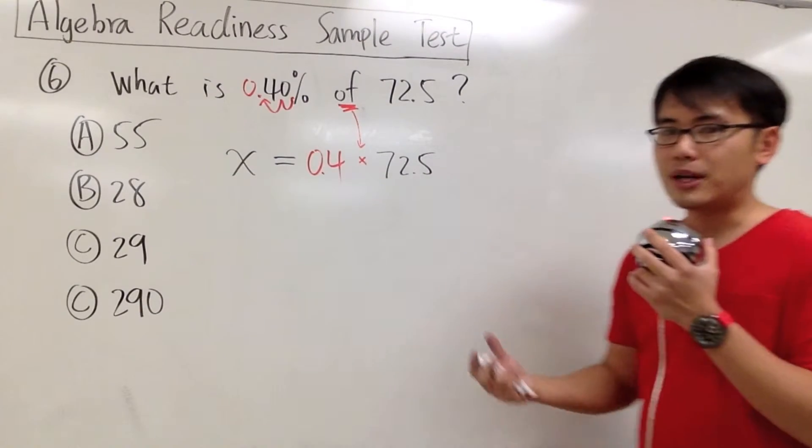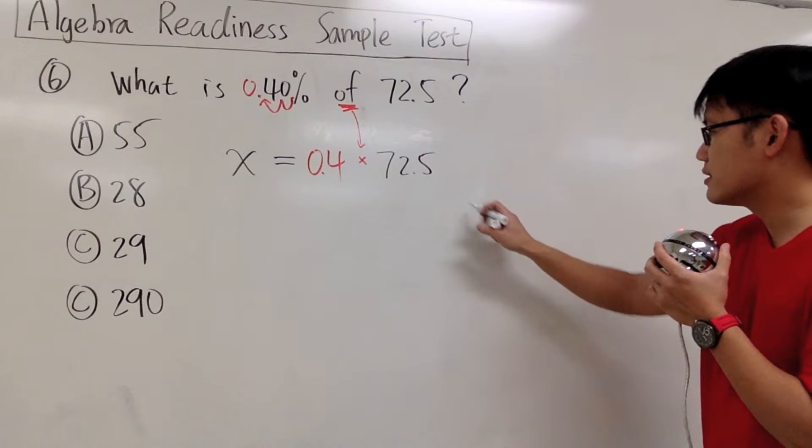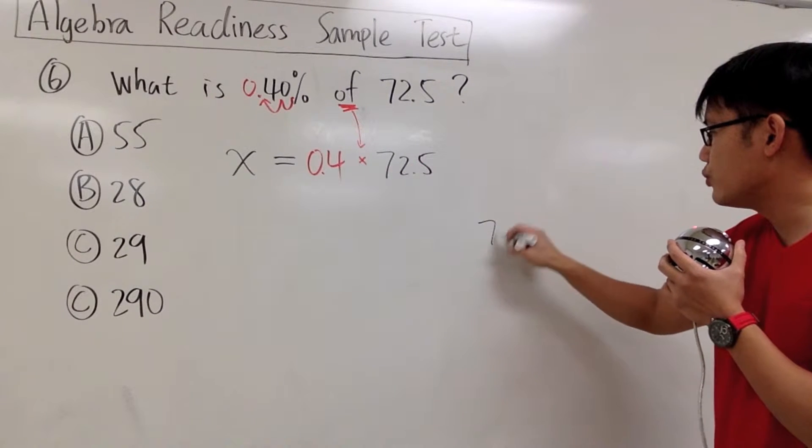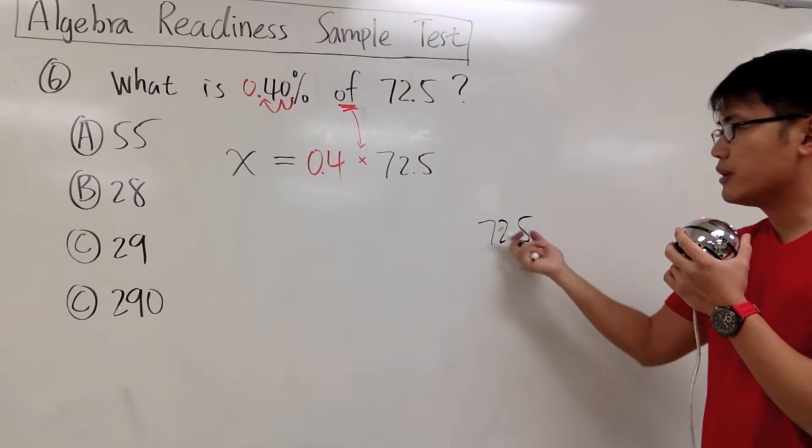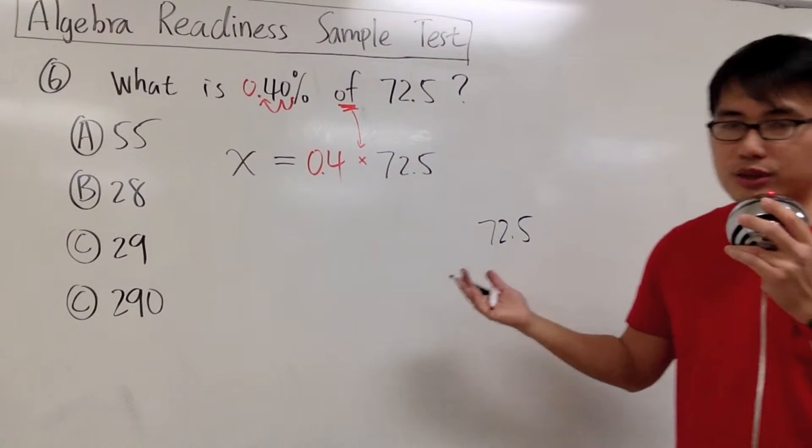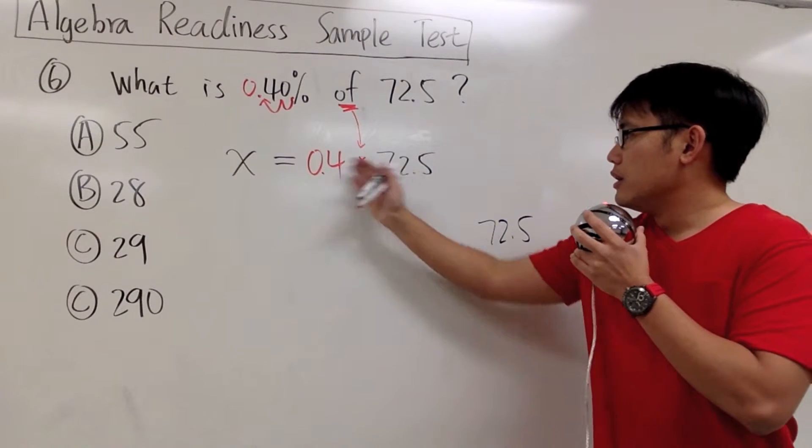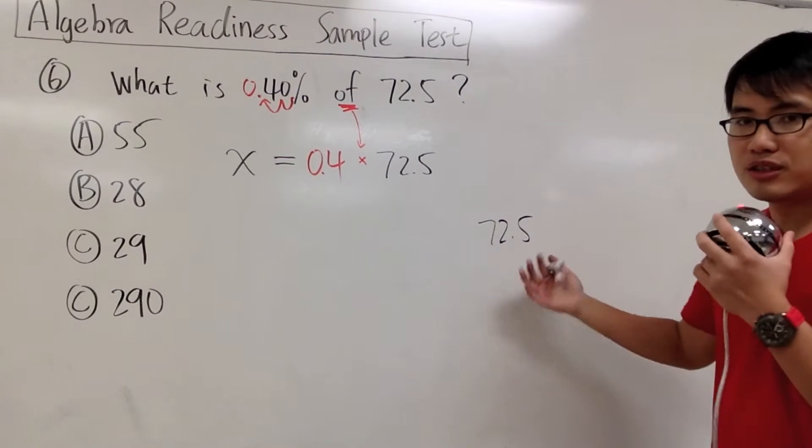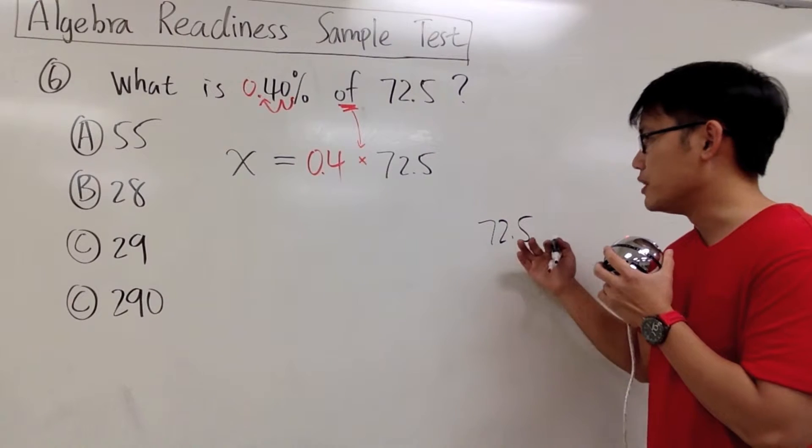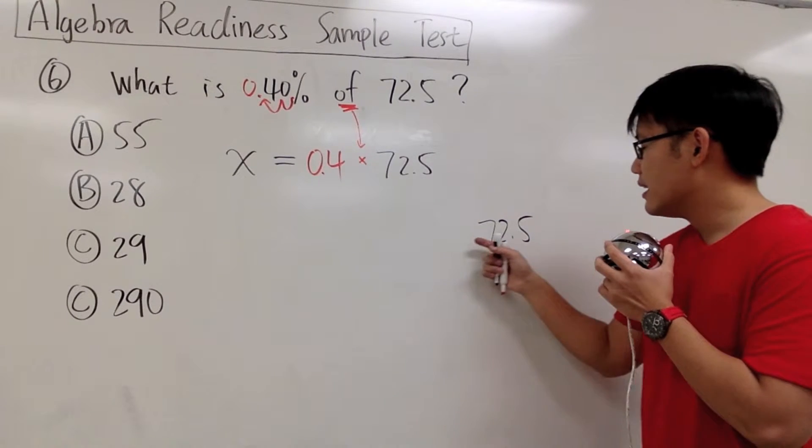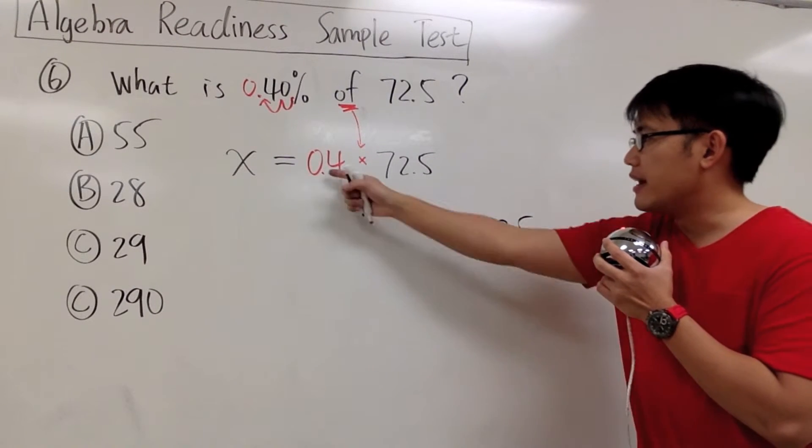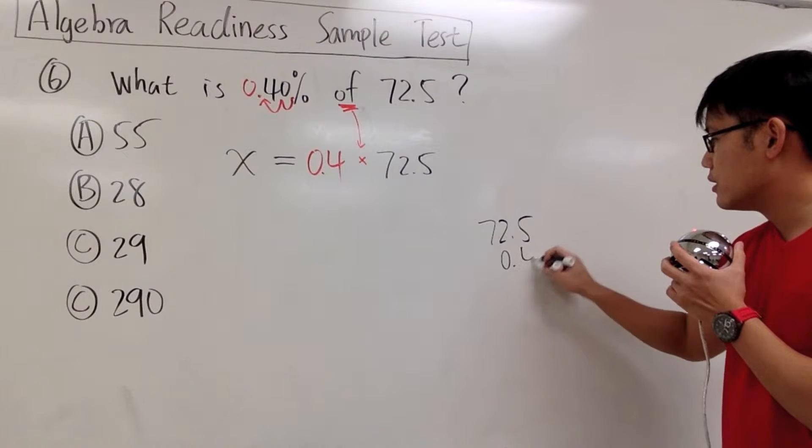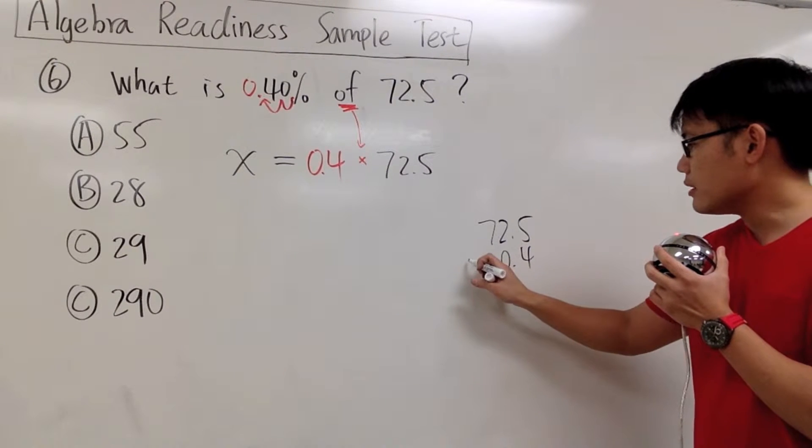put down the number with more digits on top, and the number with less digits on the bottom. I have the 72.5, let me put that on top. The reason I can do that is that the order of multiplication doesn't matter, but on top will be easier. So 72.5 on top, 0.4 on the bottom, and we multiply.